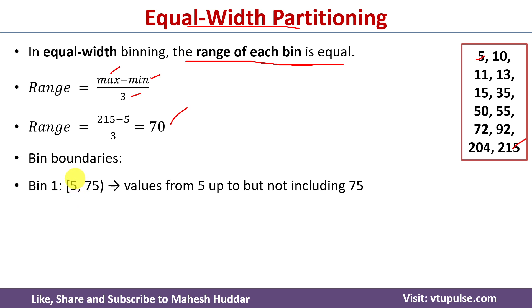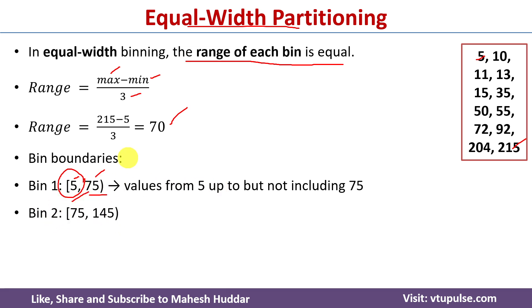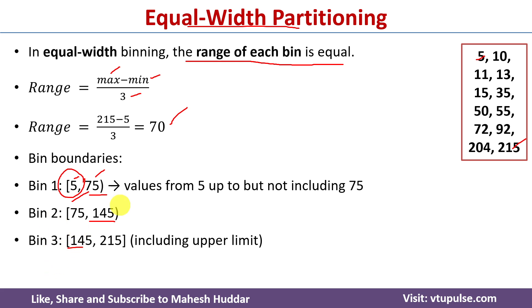First we need to find the boundaries for each bin. For the first bin, the boundary starts from the minimum value 5 and the upper boundary is 5 plus 70, which is 75. In the first bin we include the lowest value 5 but exclude 75. For the second bin, the boundary is from 75 to 75 plus 70, which is 145. For the third bin, 145 plus 70 is 215, and we include the upper limit 215.